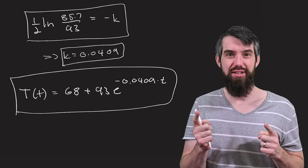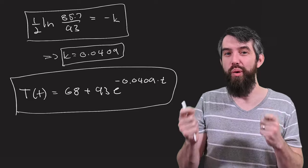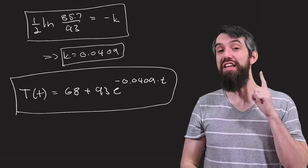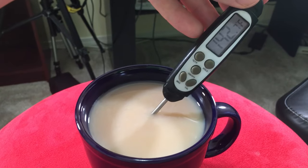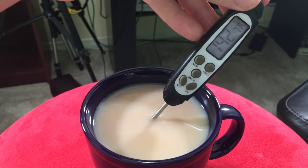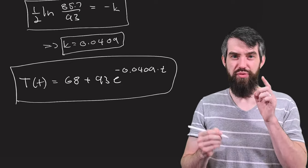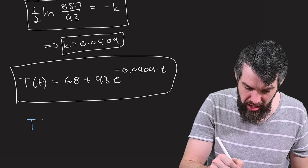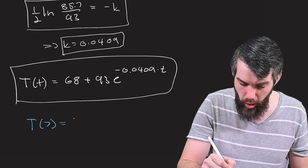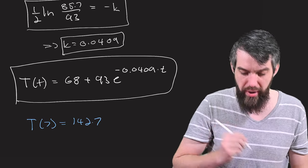But, how good is it? So I want to collect one more data point, and I did it five minutes later. And now I'm all the way down to 142.7. So this new data point thus is T of 7 is equal to 142.7. Okay, so that's the experimental.